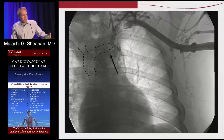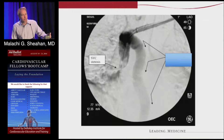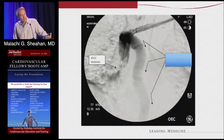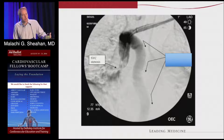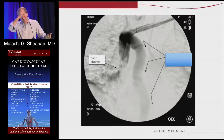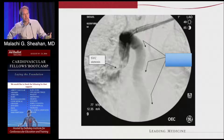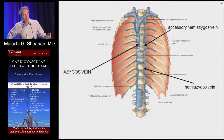With innominate central venous occlusion, the azygous vein can become quite dilated — almost as big as the innominate vein itself — and is an important collateralization around central venous occlusions. But not everybody has a well-developed azygous system because venous anatomy is very inconsistent and the azygous can take a variety of pathways.